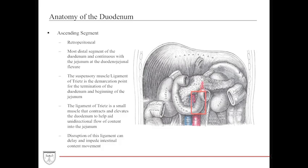At the top of the fourth segment of the duodenum is a structure called the ligament of Treitz — a muscle-based structure that is the demarcation point where the duodenum ends and the jejunum begins. The ligament of Treitz contracts and elevates the duodenum to help aid unidirectional flow of food into the jejunum. Without this structure, the flow of food contents may be impaired.